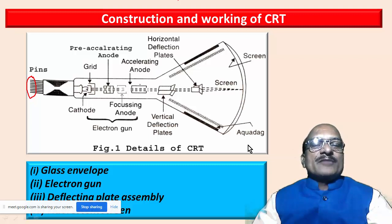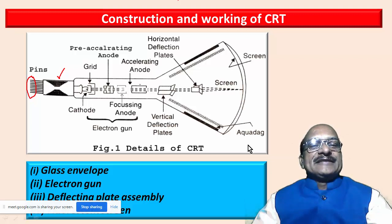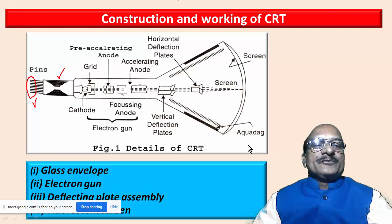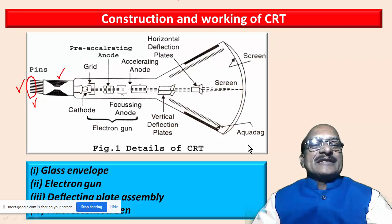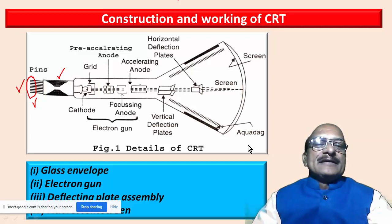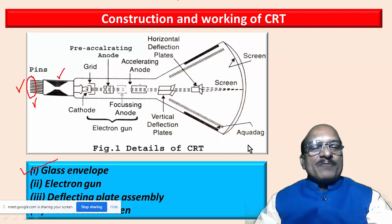We start observing the working of this from the left-hand side. This is called the base of the cathode ray tube, and to this base the pins are fixed. Electrical connections with the electrodes inside this tube are made through these pins. The pins are just outside the glass tube and are fixed on a rigid support — this is usually called the base of the cathode ray tube.